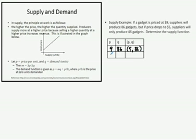And if the price drops to $5, we'll only make 46 units. So 5, 46 will be our supply right here.